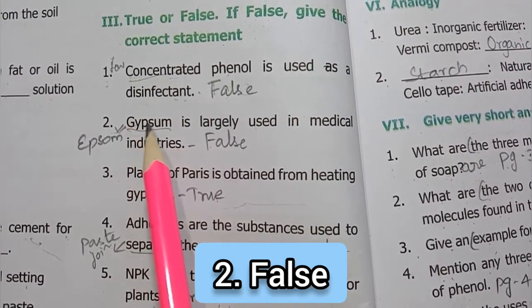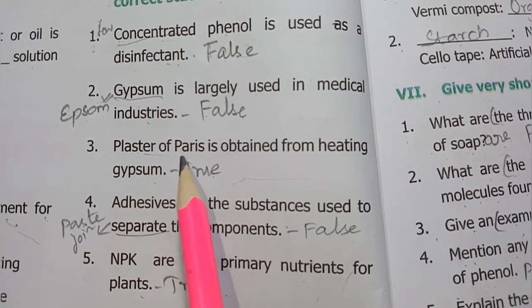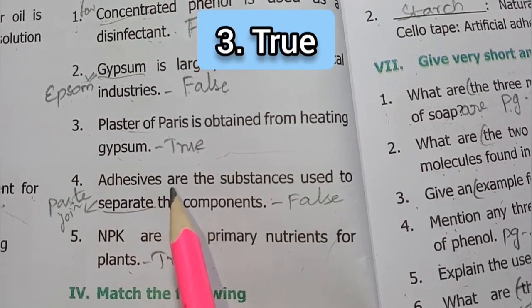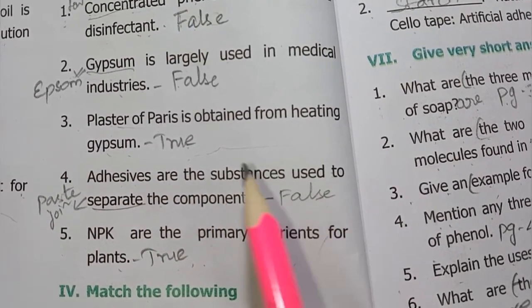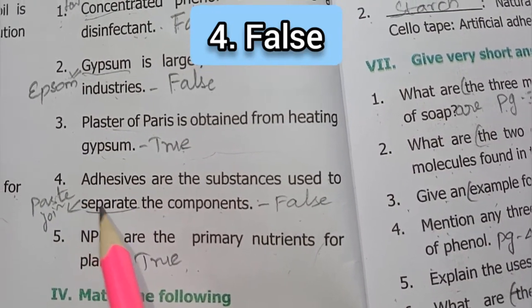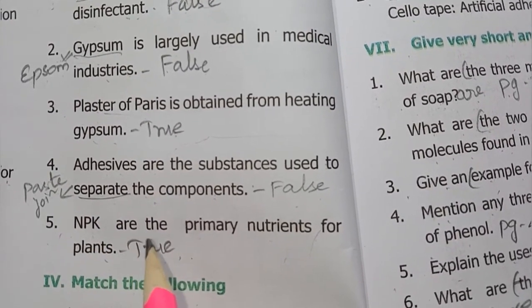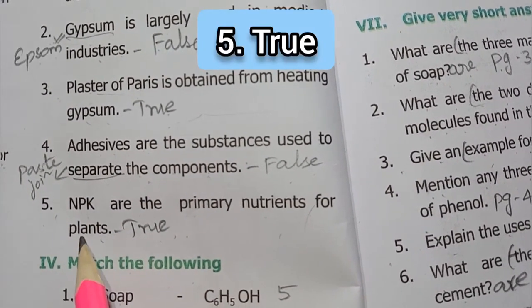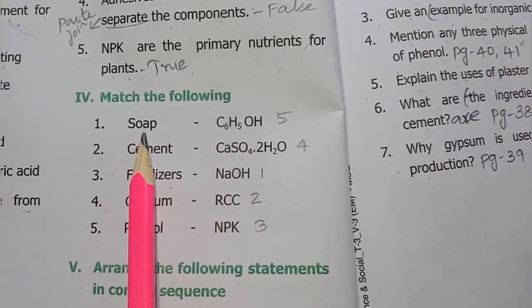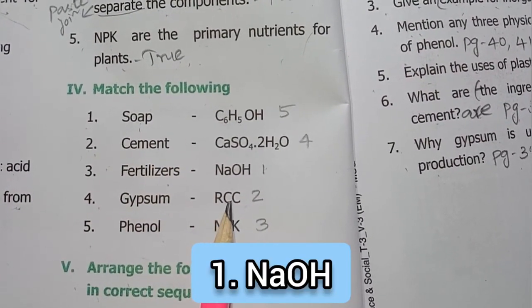Correct statement: gypsum is used in construction industries. Third one: plaster of paris is obtained from heating gypsum — true. Fourth one: adhesives are the substances used to separate the components — false. Correct statement: adhesives are substances used to join/bind components.